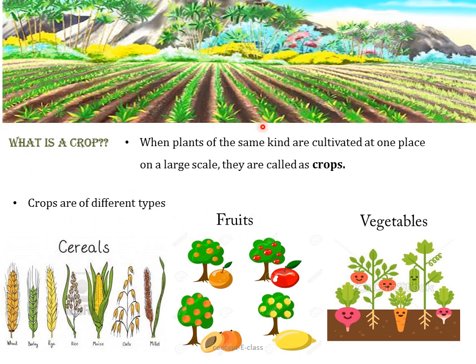When plants are cultivated on a large scale they are called crops. For example, when fruits are cultivated on a large scale they are called fruit crops, and when vegetables are grown on a large scale they are called vegetable crops.